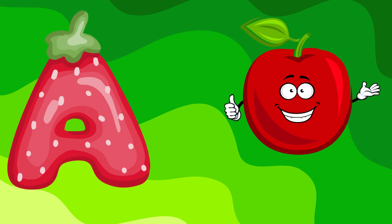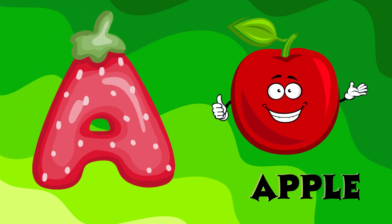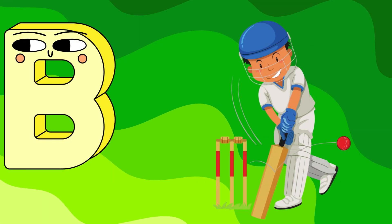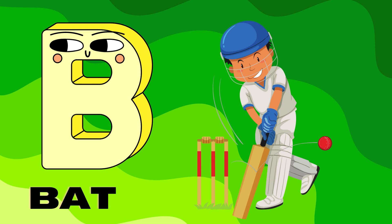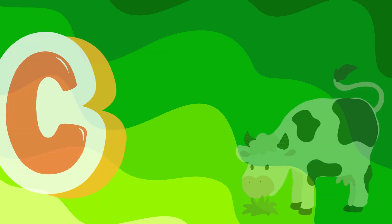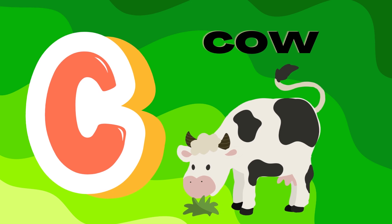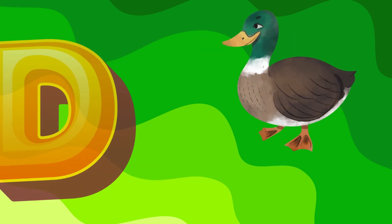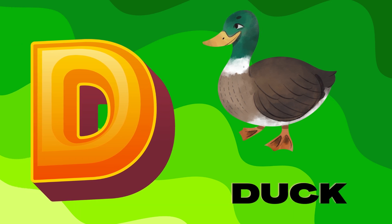A. A is for apple. B. B is for bat. C. C is for cow. D. D is for duck.